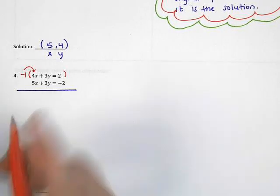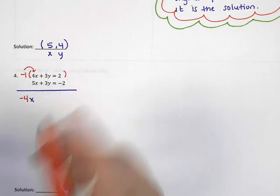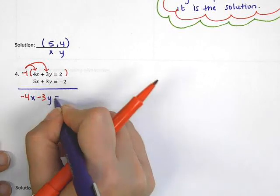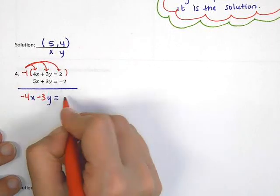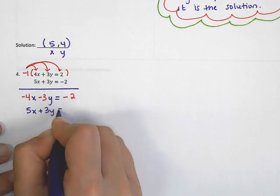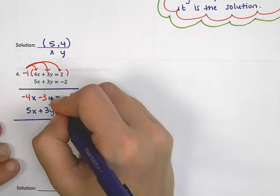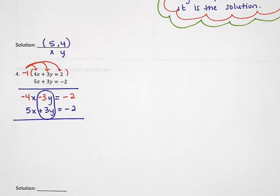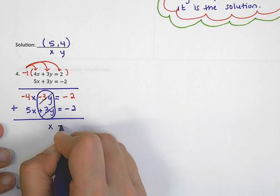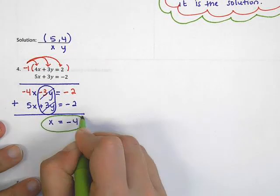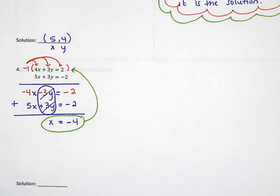When I distribute, I get negative 4x minus 3y, and negative 1 times 2 would be negative 2. The bottom equation doesn't need to change, so we have 5x plus 3y equals negative 2. Now the y terms will eliminate because they have opposite signs for their coefficients — 3 and negative 3 will cancel. Adding: negative 4x plus 5x is 1x, and negative 2 plus negative 2 is negative 4. So x equals negative 4.